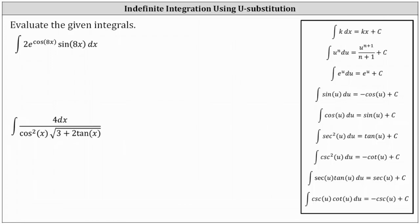In this lesson, we will take a look at evaluating two indefinite integrals using the method of u-substitution. Analyzing the first integral, we can either let u equal sine 8x or u equal cosine 8x. If we let u equal the sine function, differential u is going to involve the cosine function, and because the cosine function is in the position of the exponent, that's not going to work. We're actually going to let u equal the exponent of cosine 8x, because we'll be applying the integration formula for the integral of e to the u, du.